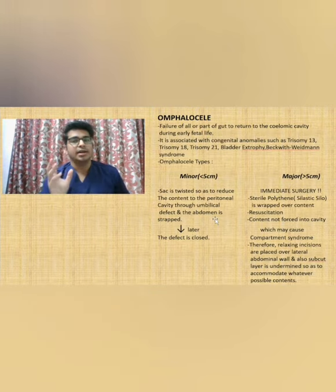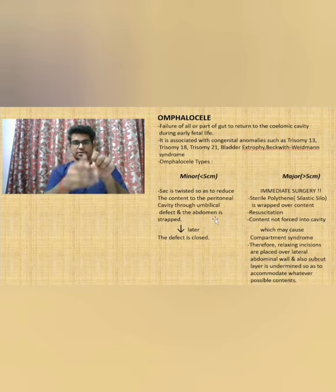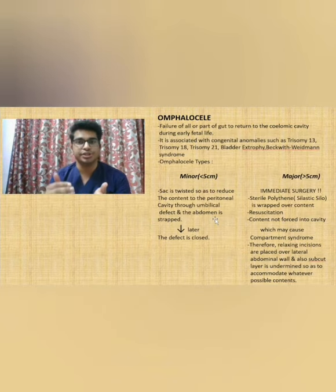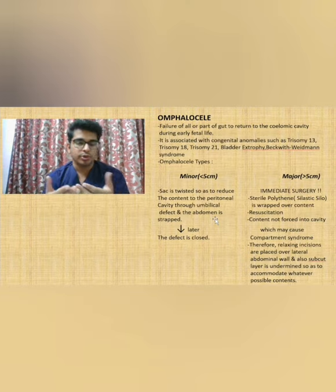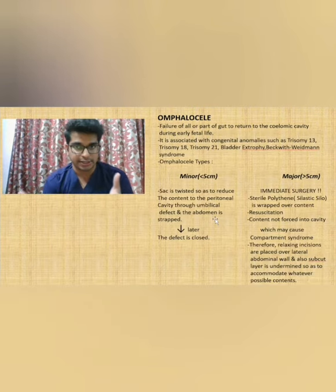Minor defects can be easily surgically corrected — we can twist the sac and reduce the contents back into the abdominal cavity. For larger defects, para-umbilical relaxing incisions are made so that the space inside increases. Additionally, subcutaneous tissue under the skin can be removed so that the abdominal cavity has enough space to accommodate the herniated loops of intestines.